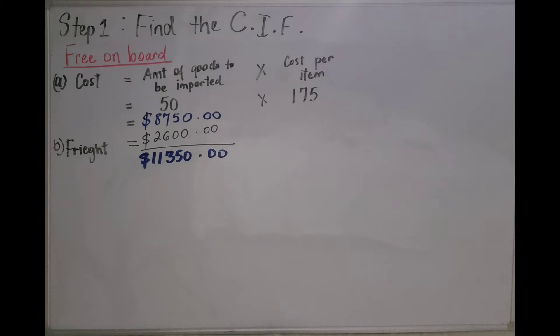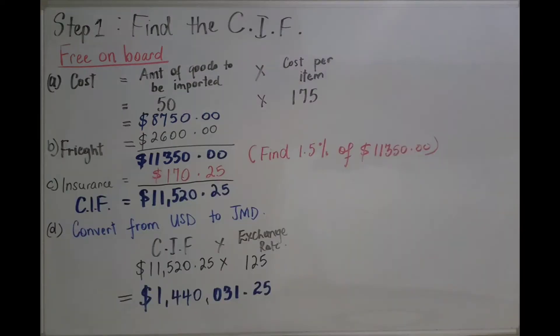Now, we need to find the insurance. In order to find the insurance, we must find the insurance rate. We're shipping by sea, so we know that it is 1.5% of the cost and freight. It's 1.5% of $11,350 which would give us $170.25. We add that $170 to the $11,350 and we will get $11,520.25.